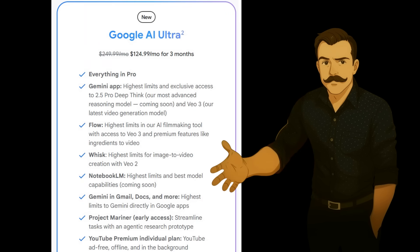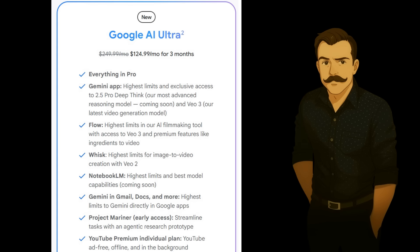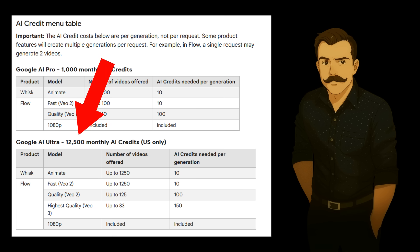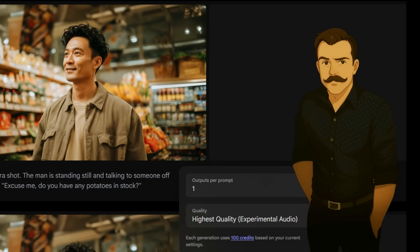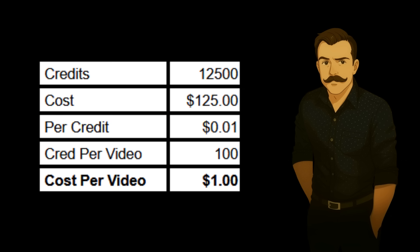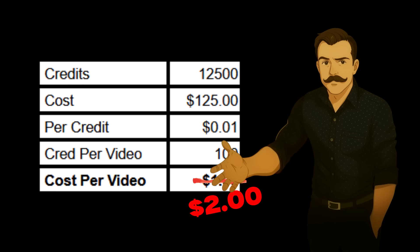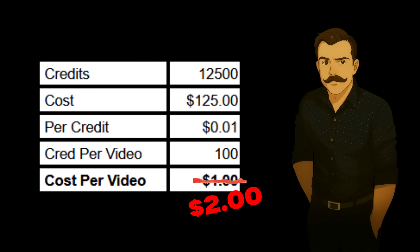In a decision that I would soon regret, I recently decided to take advantage of a 50% off promo and paid $125 plus tax for a month of Google AI Ultra, which bought me 12,500 credits to use with VO3. Since each 8-second video generated consumes 100 credits, this means I paid about $1 for every video generated. The normal price would come to about $2 per 8-second video, which would still be completely fair if the videos had anything even remotely approaching a high success rate — but unfortunately they absolutely do not.